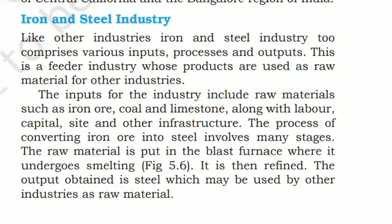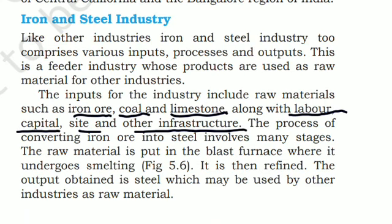The iron and steel industry comprises various inputs, processes, and outputs. It is the feeder industry, whose products are used as raw material for other industries. The inputs include raw materials such as iron ore, coal, and limestone, along with labor, capital, site, and other infrastructure. The process of converting iron ore into steel involves many stages. The raw material is put in the blast furnace where it undergoes smelting and is then refined. The output obtained is steel, which may be used by other industries as raw material.